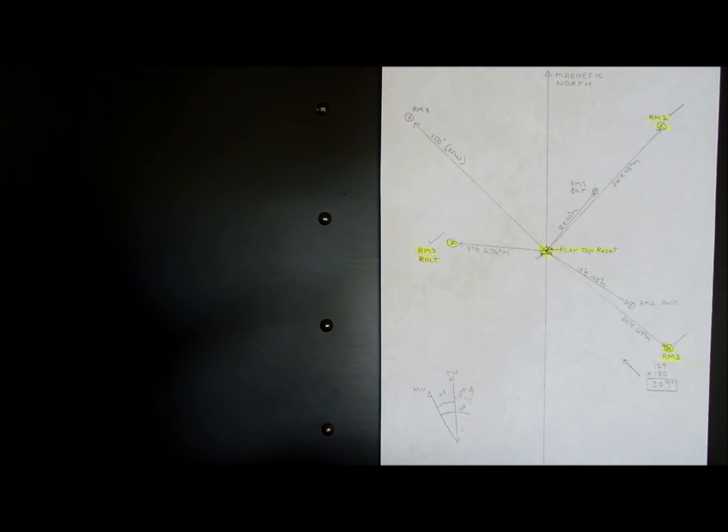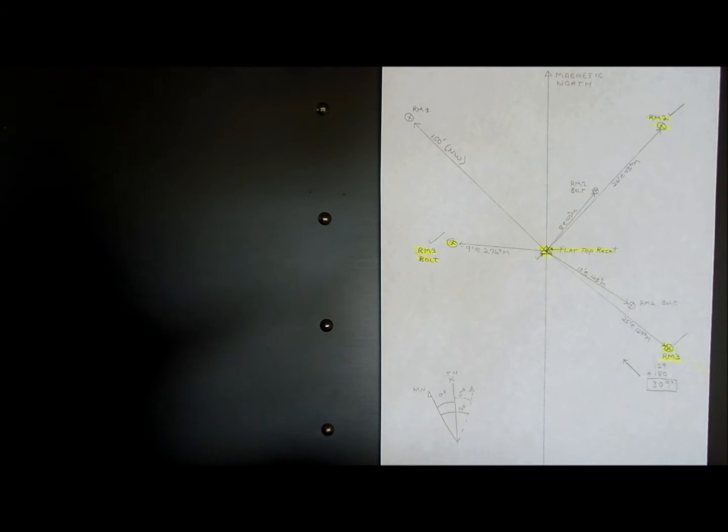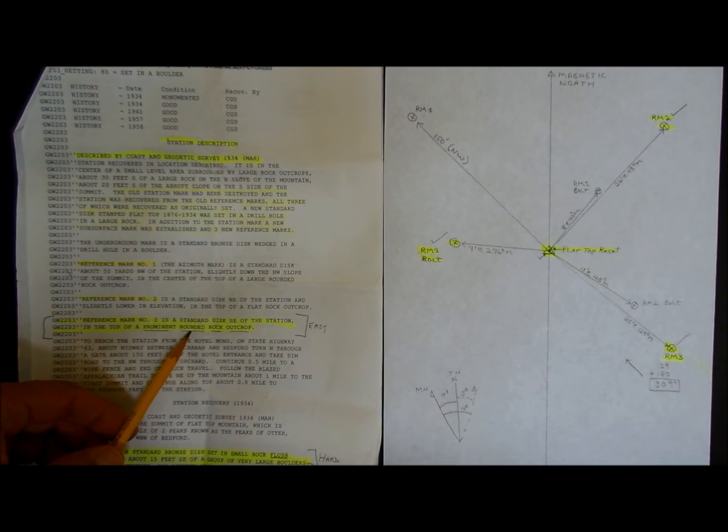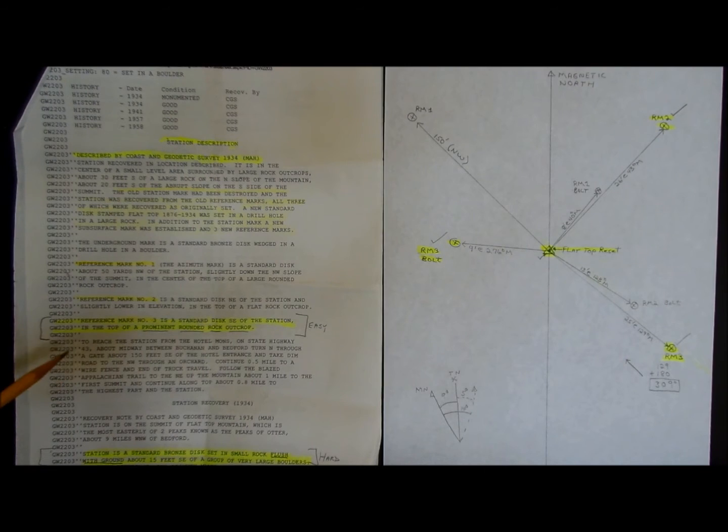Once you actually get to the summit, these station descriptions become very important. And I'll just show you a couple. Here's the descriptions from 1934. Notice it says here that reference mark number three is a standard disk southeast of the station in the top of a prominent rounded rock outcrop.